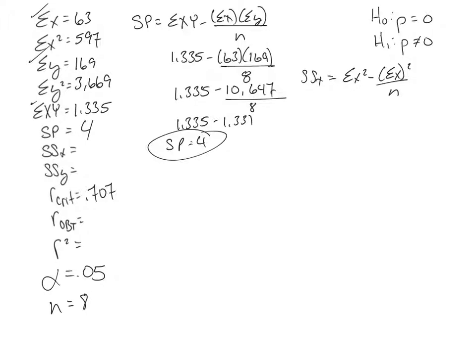So I'm going to use my X data, so 597 minus my sum of X was 63, so I'm going to square that, divided by N, my sample size of 8. Or 597 divided by 3,969 divided by 8, or 597 minus 496 gives me a sum of squares for my X of 101.